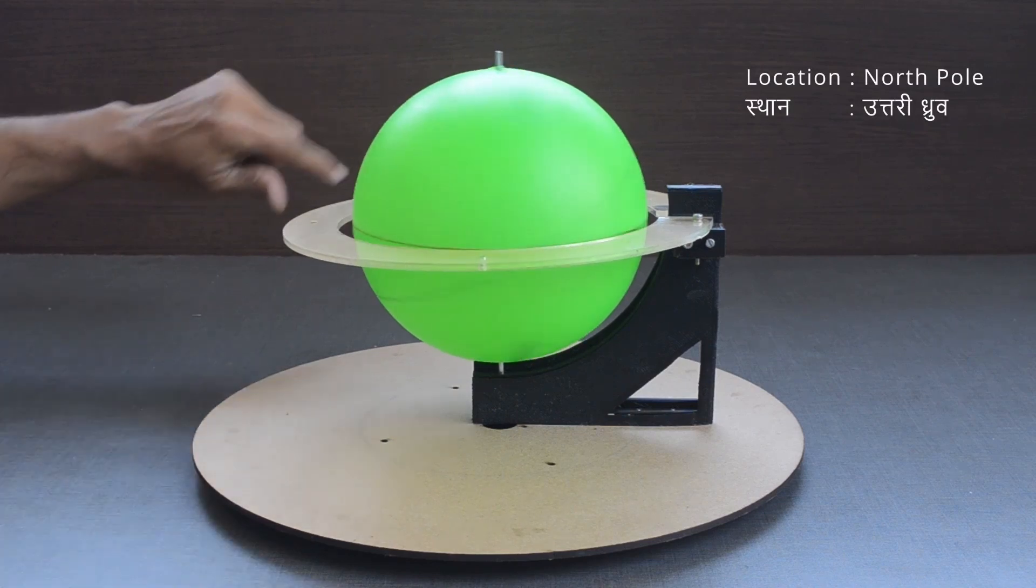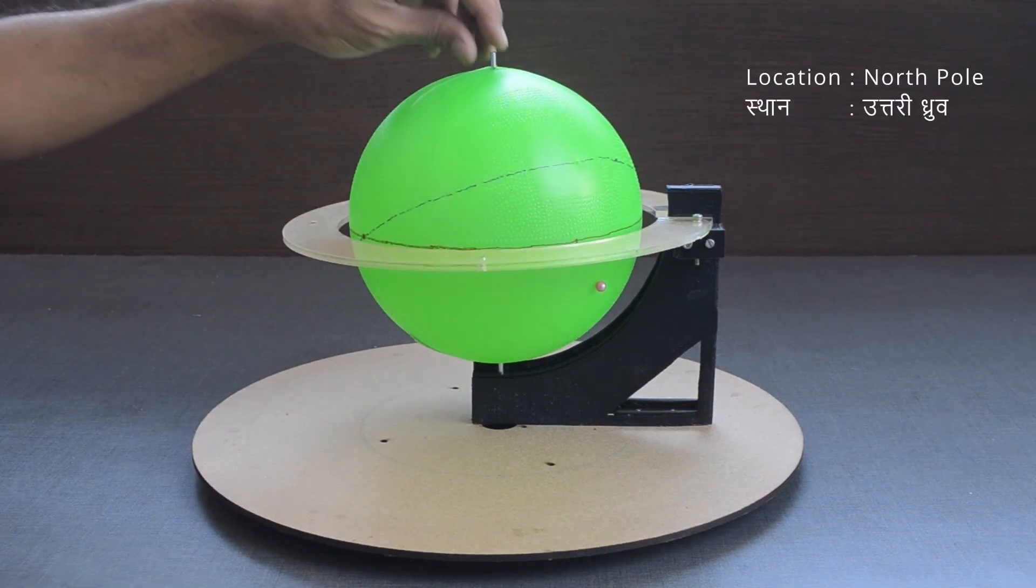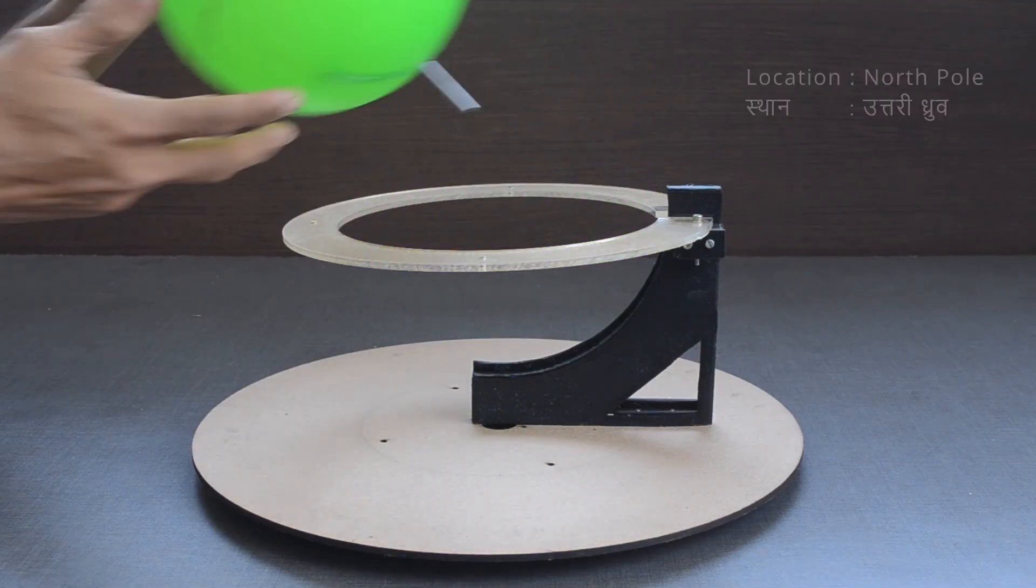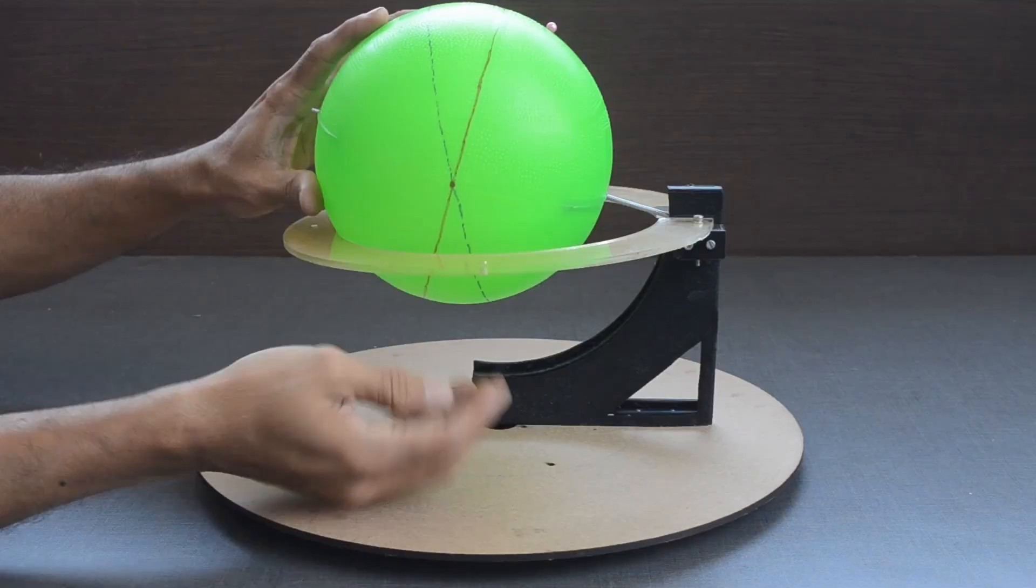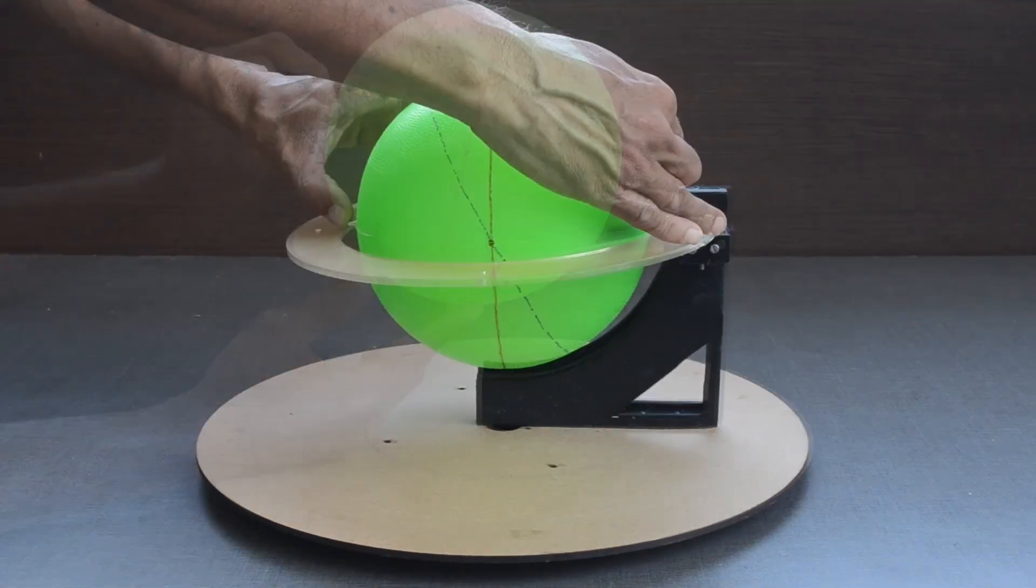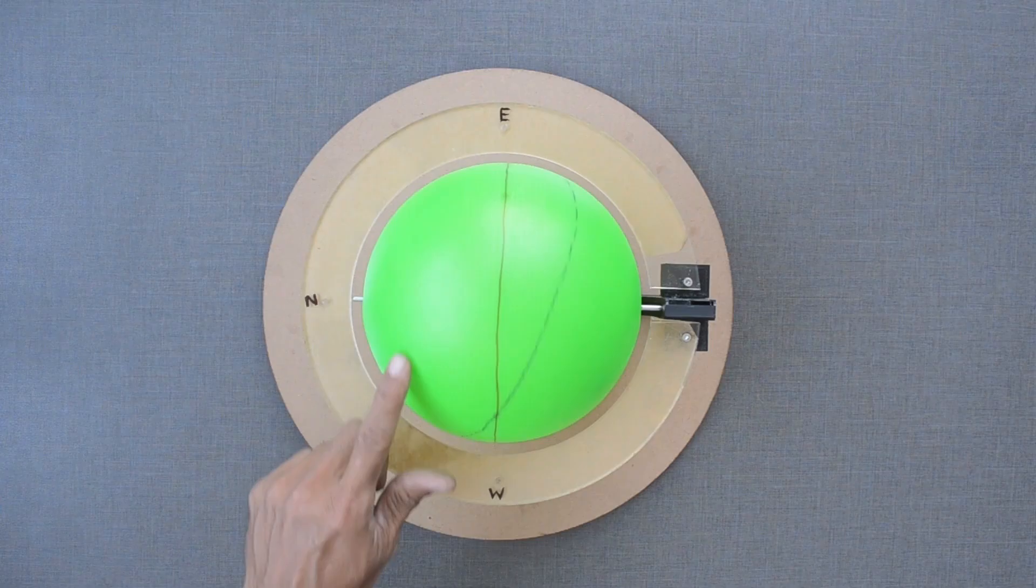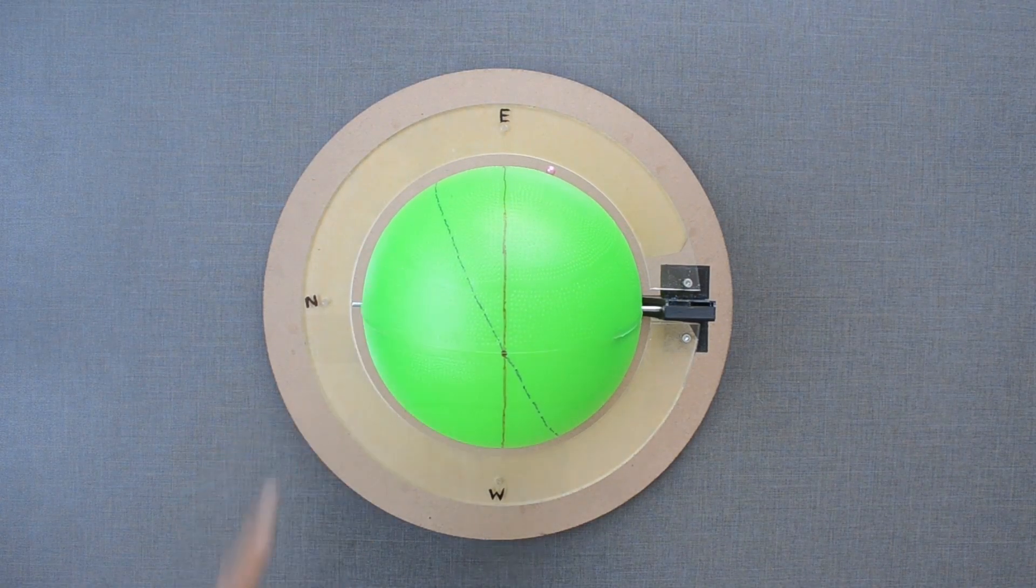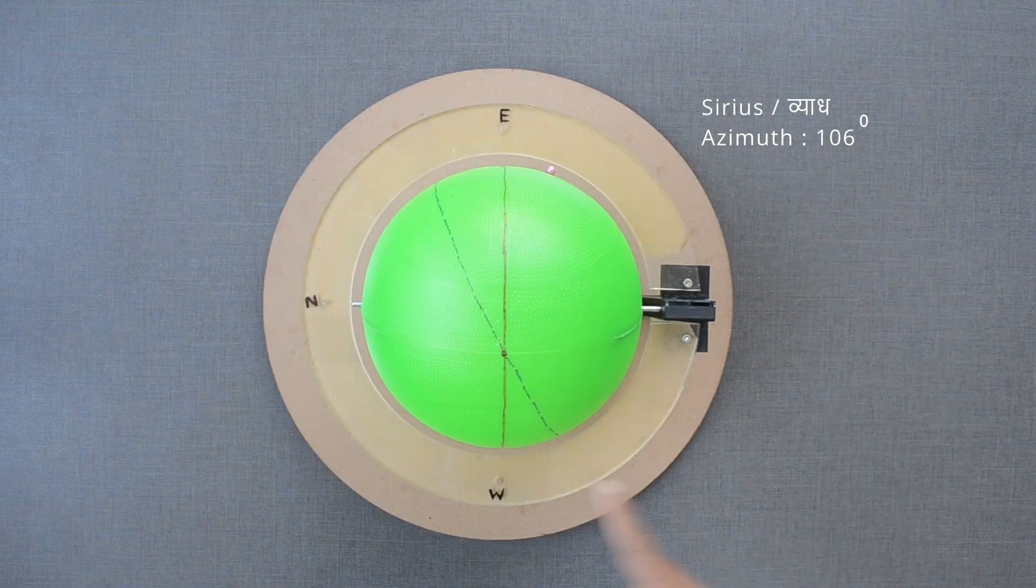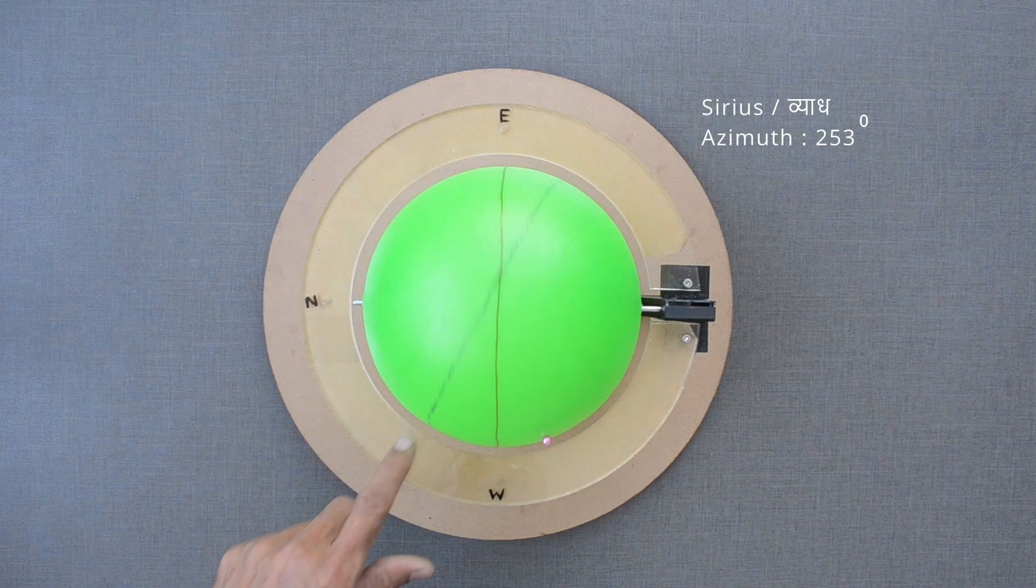For a person on the north pole, the celestial sphere will rotate like this. While for a person on the equator, it will rotate like this. Star Sirius will rise on the east at this location and set in the west at this location.